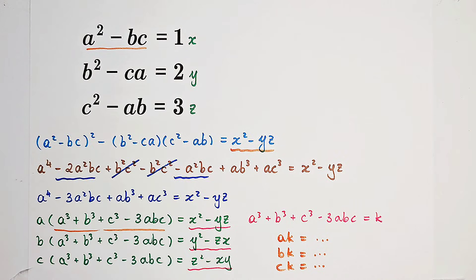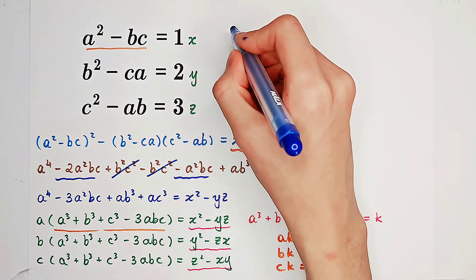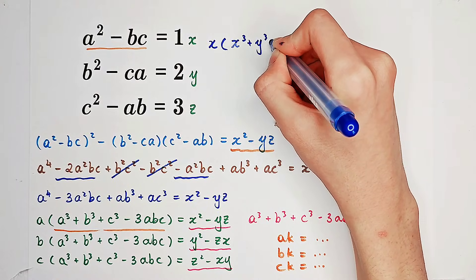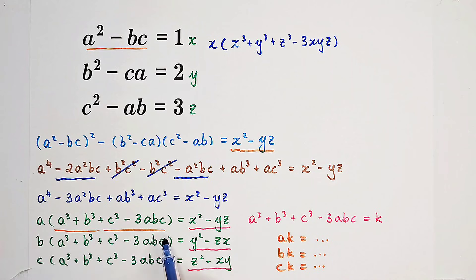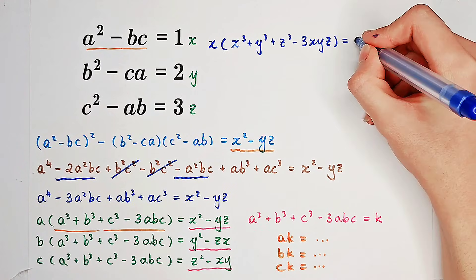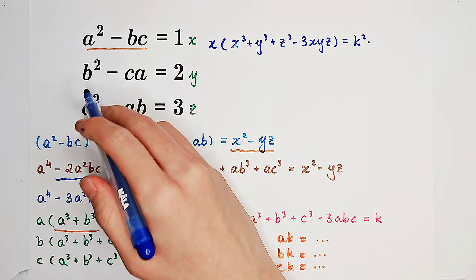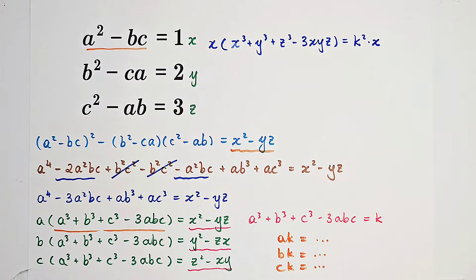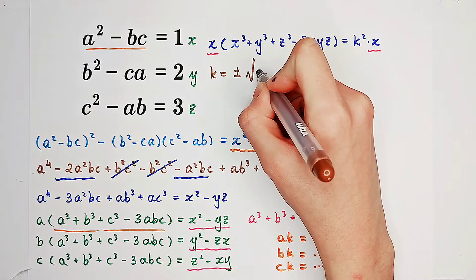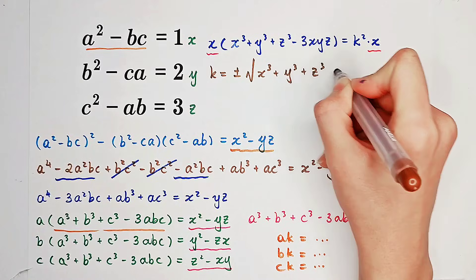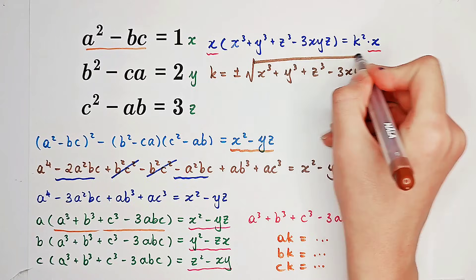Since they have the same form, (x squared minus yz) squared minus (y squared minus zx)(z squared minus xy) equals x times (x cubed plus y cubed plus z cubed minus 3xyz). This has the same form as before. So x squared equals (ak) squared minus (bk)(ck), which is k squared times (a squared minus bc), and since a squared minus bc equals x, we get k squared times x. Because x is positive and nonzero, k equals positive or negative square root of (x cubed plus y cubed plus z cubed minus 3xyz).